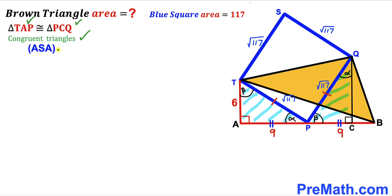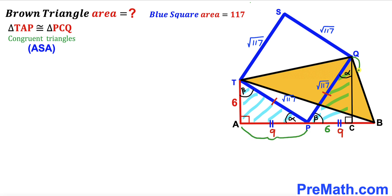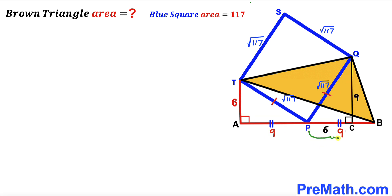The side length TP of the blue square equals side length PC, being parts of the same square. Therefore right triangles TAP and PCQ are congruent by the Angle-Side-Angle congruency theorem. Since the triangles are congruent, segment TA equals segment PC — so PC is 6 units. Similarly, segment AP equals segment QC — so QC is 9 units. Also, since PB is 9 and PC is 6, the remaining segment BC is 3 units.